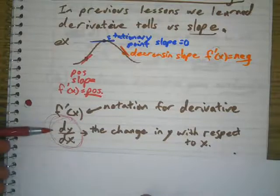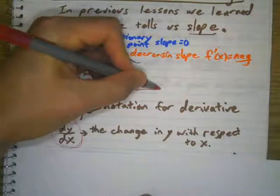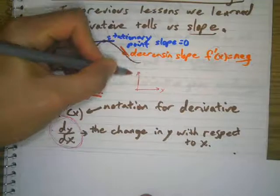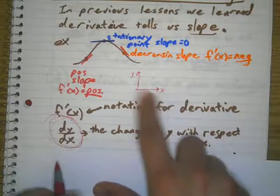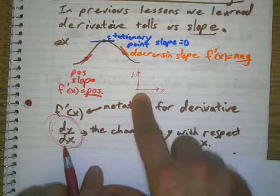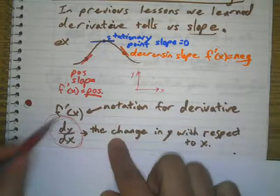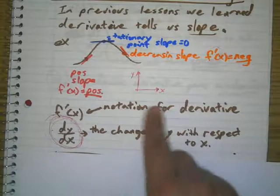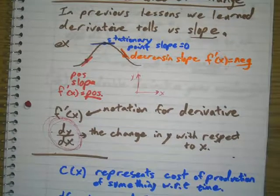This is saying, so like if my graph was like this, where this is the x-axis and this is the y-axis, this is saying the change of y with respect to the change of x. And we're going to be using this, but instead of y and x, we're going to have other letters. And I'm going to show you an example, a few examples.